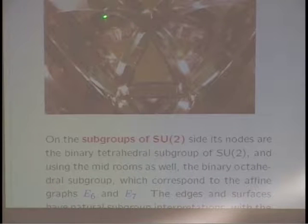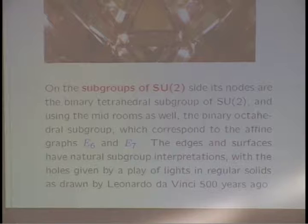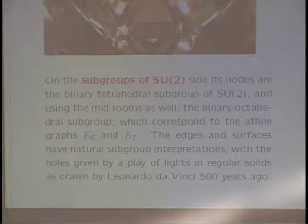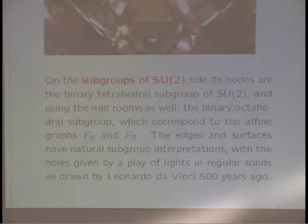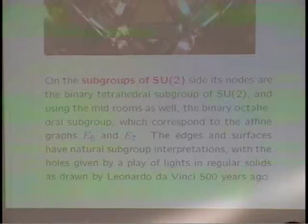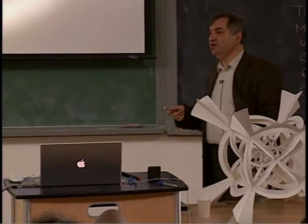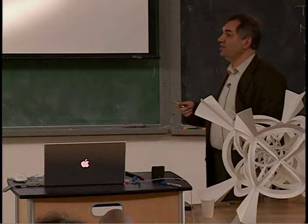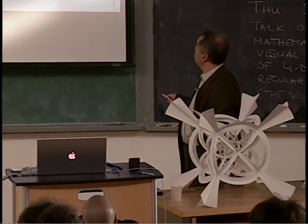Look — this looks like it's transparent. Now, what are the two members of the McKay correspondence that I'll be talking about? On the one side, you have subgroups of SU(2). SU(2) is almost the same as the rotation group SO(3). It has subgroups related to the Platonic solids.